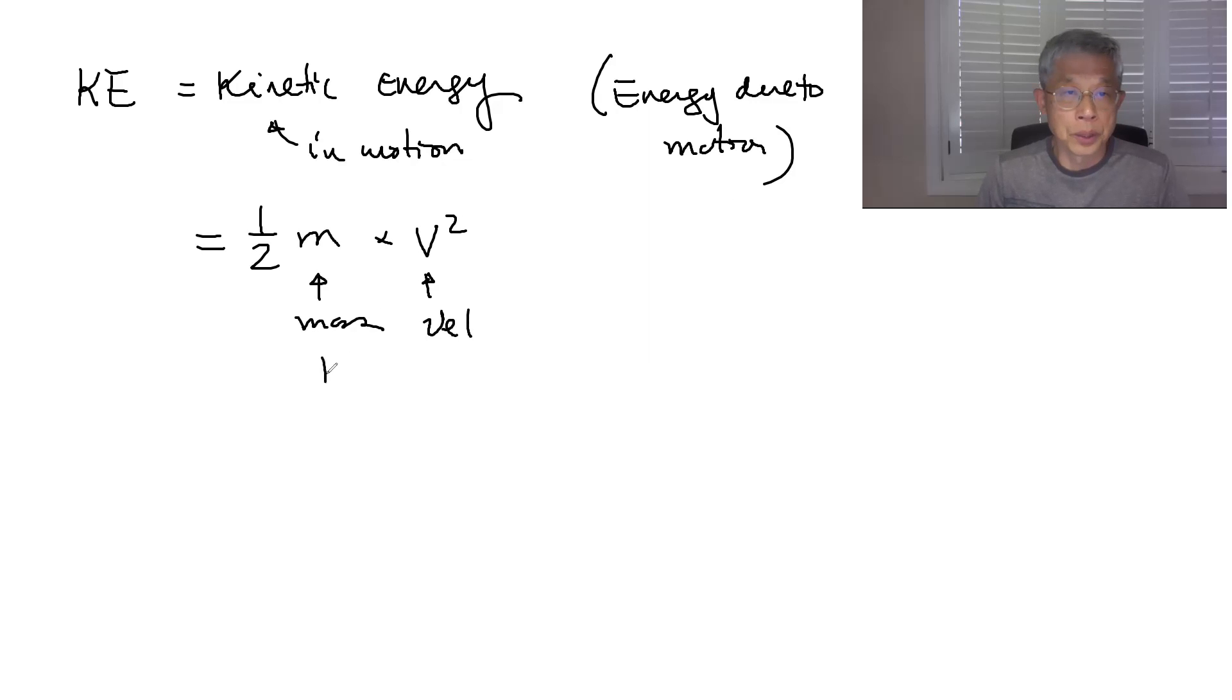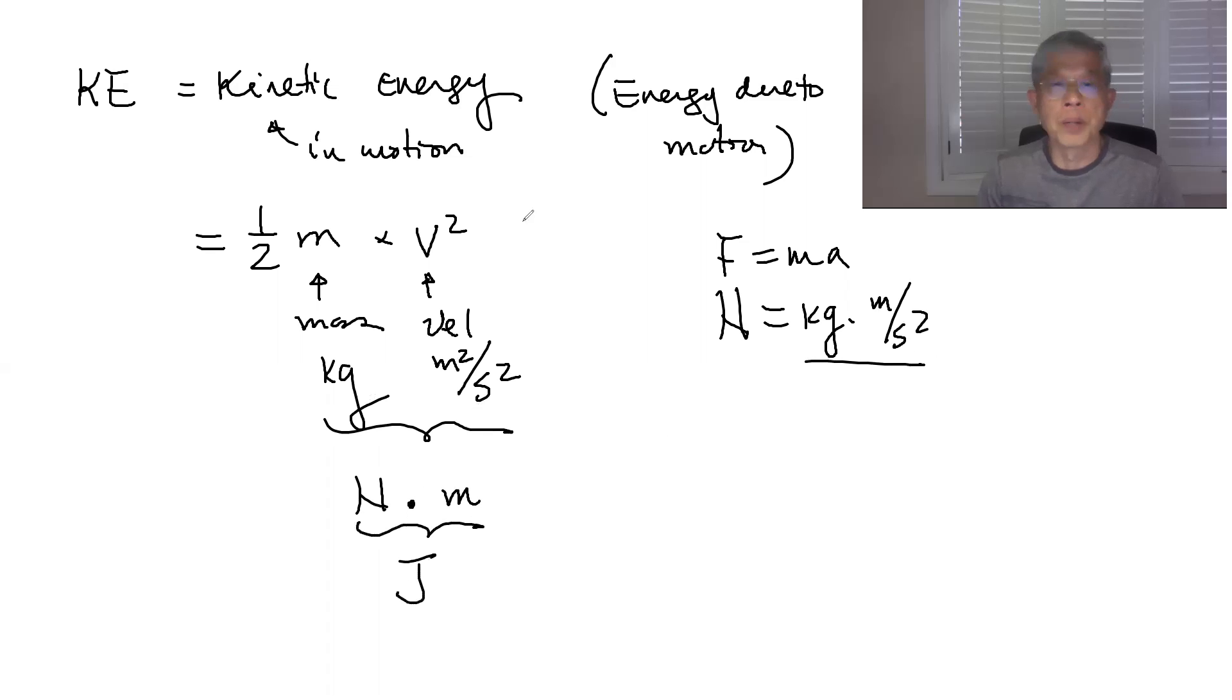So I want to check the unit. This is kg and this is meter squared and then second squared. And remember Newton, which is f equal to ma, this is equal to kg meter per second squared. So you can see this one here can be written as Newton times meter. So kg times one meter divided by second squared, which is this one. So then this one here is equal to your joule. So this indeed is in the unit of joule.